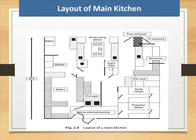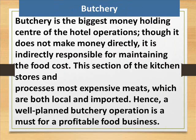Butchery is the biggest money-holding center of hotel operations. Though it does not make money directly, it is indirectly responsible for maintaining food cost. This section of the kitchen stores and processes the most expensive meats, both local and imported. Hence, a well-planned butchery operation is a must for a profitable food business.